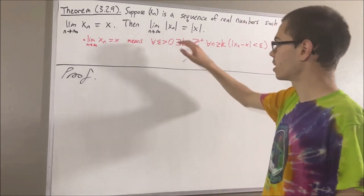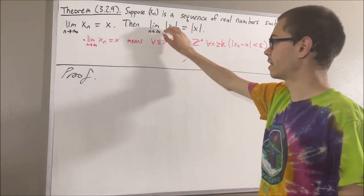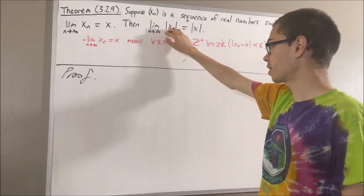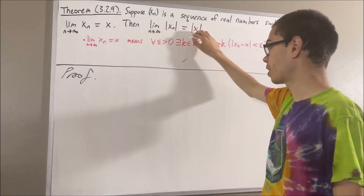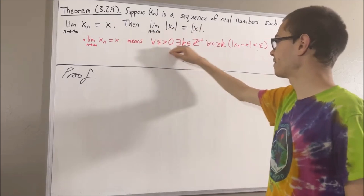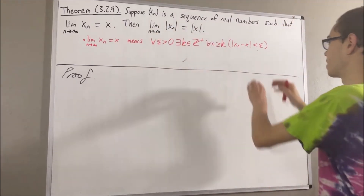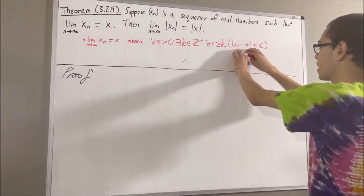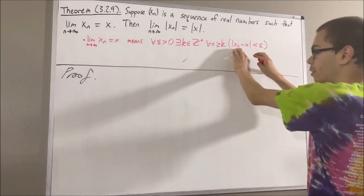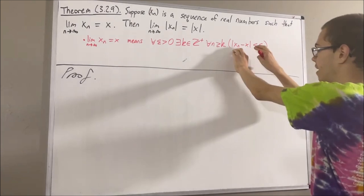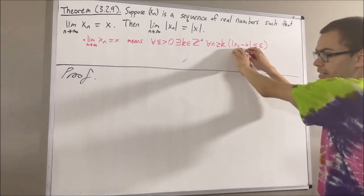In a simpler way, to say that the absolute value of xn converges to the absolute value of x is the same thing — it's just instead of xn and x, we have the absolute value of xn and the absolute value of x.